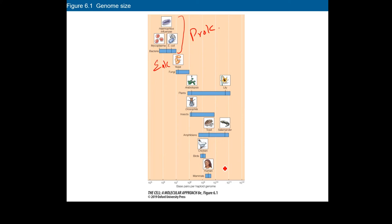Humans have about 3.2 billion base pairs of DNA. You can also write them as mega base pairs, or 3.2 billion base pairs of DNA.